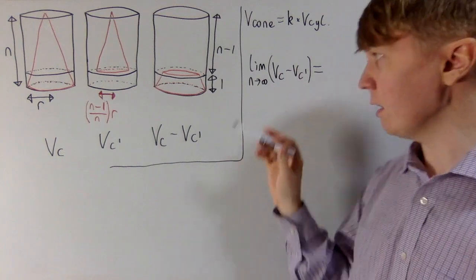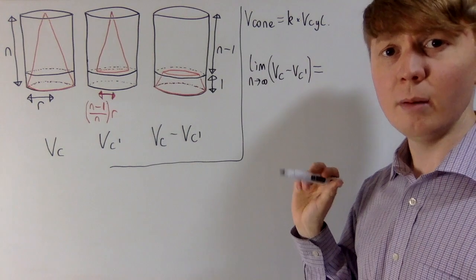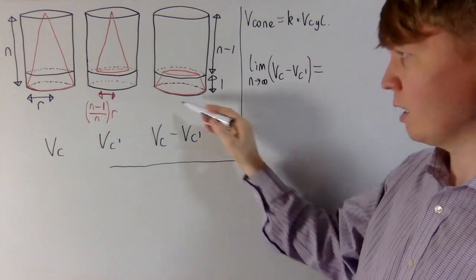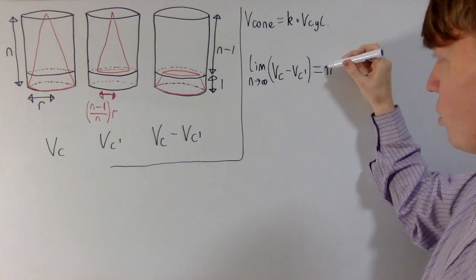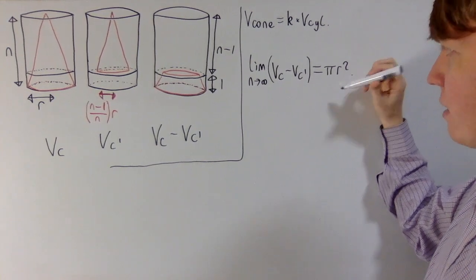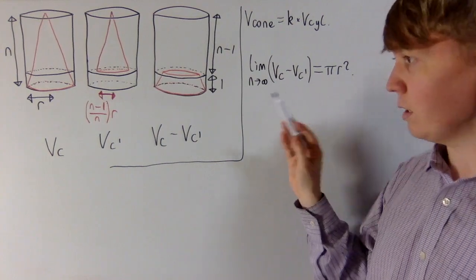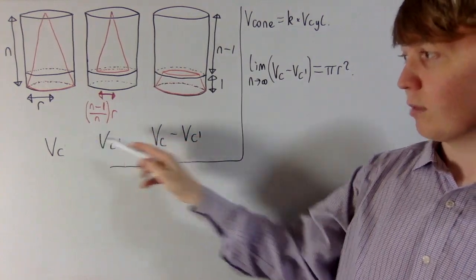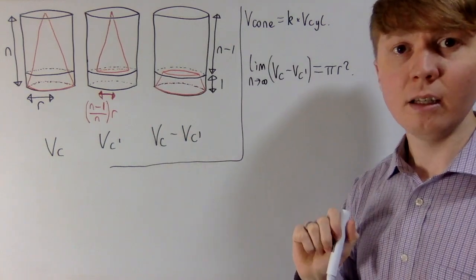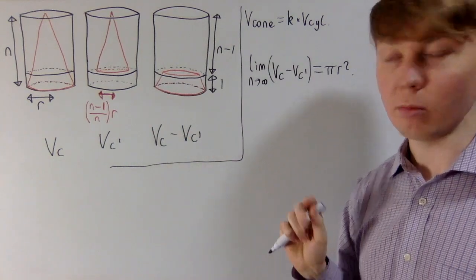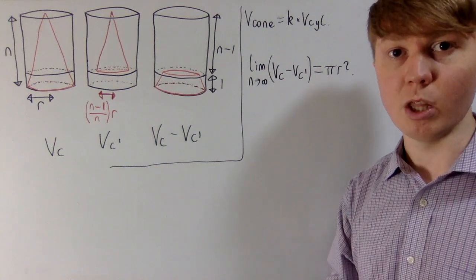So what does that tell us about the limit? As n goes to infinity, the volume of our frustum needs to equal the volume of that small cylinder: it's πr² times the height, the height's just one, so this equals πr². We'll take advantage of this fact, find a nice way of expressing VC and VC dash in terms of n, r, and k, then set this equal to πr² and hopefully show that k equals one third.